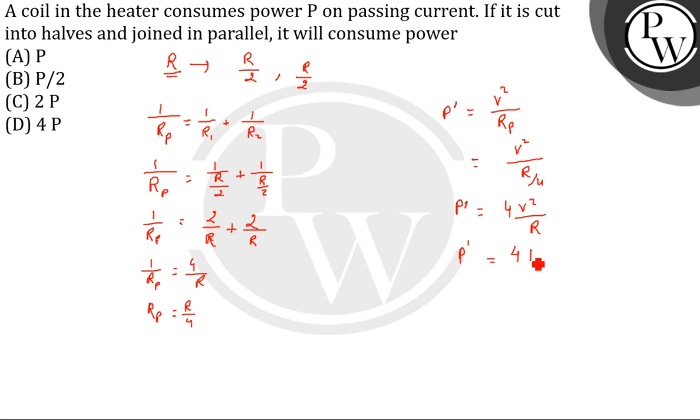P dash is equal to 4 of the initial power. V square by R is the formula for the initial power. So it gives us 4 times of the initial power, so the correct answer will be option number D, 4P. Thank you.